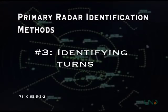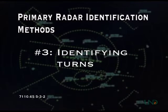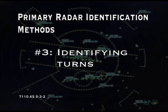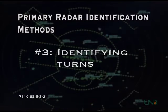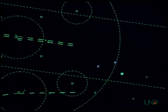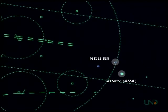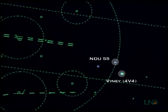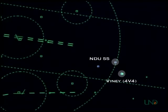The third method utilizes identifying turns. An identifying turn is defined as a turn of 30 degrees or more. When issuing identifying turns, be mindful of other aircraft in the area. In this example, SU-55 has taken off from Vinny and is squawking VFR. The pilot requests flight following, and the controller issues an identifying turn.